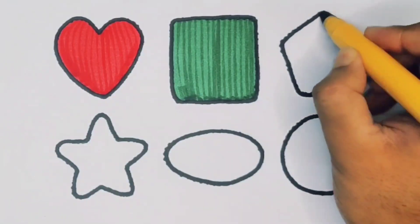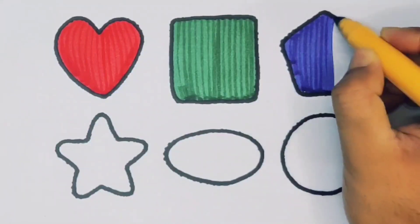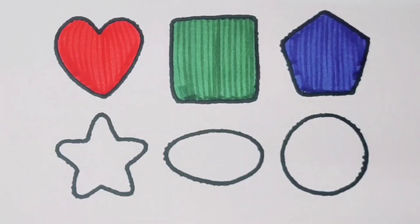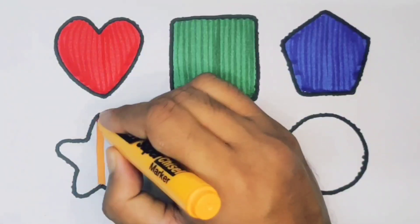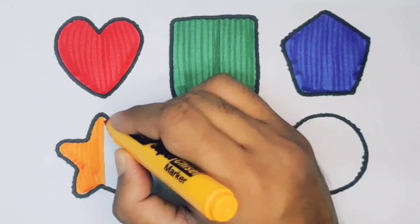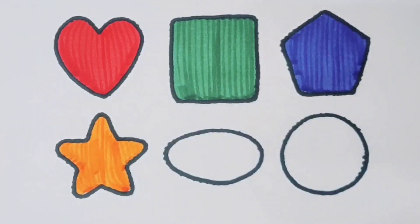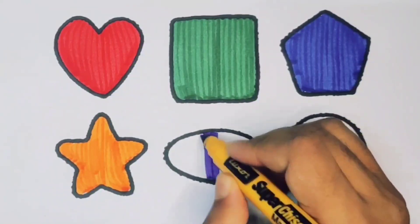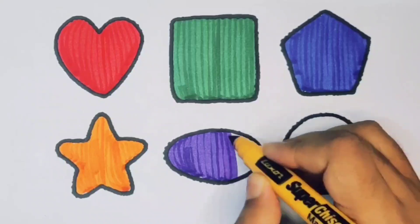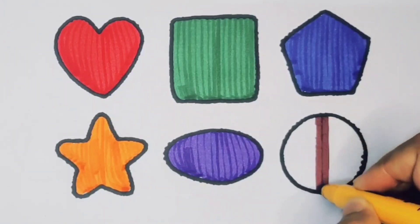Blue color pentagon, orange color star, purple color oval, chocolate color circle.